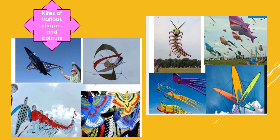Children, here in this slide I have shown you kites of different shapes and colors. They look very, very interesting. If you look at them closely, there is a lady flying a kite looking like an aeroplane. Then there are kites shaped like a dragon. Some of them look like butterflies, octopuses. There is also a kite which has got numerous human figures attached one after the other and it has got a long tail.